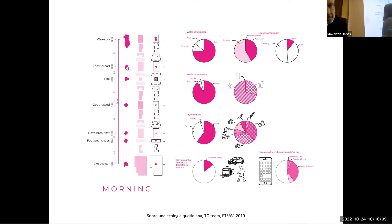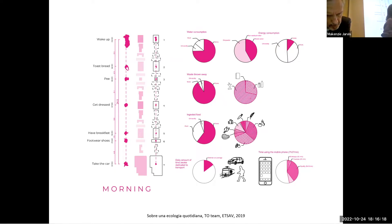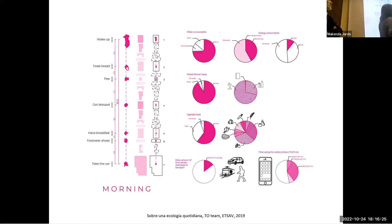One of the activities that we do constantly is architecture, the building activity. And the utility of this activity is to produce habitability. So we have some needs, some satisfaction that we need to produce, and we do activities to produce that satisfaction.